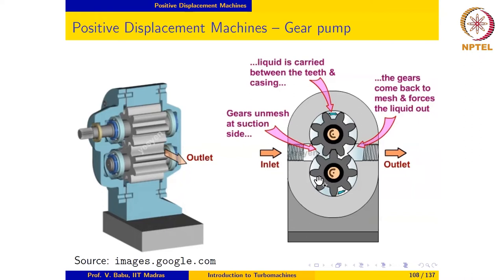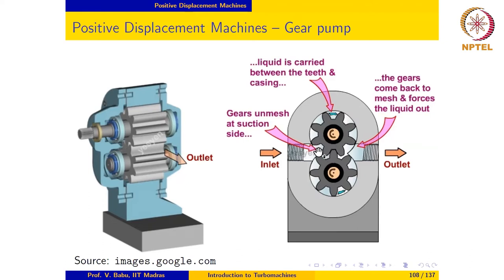When a pair of teeth come up to the inlet point, the gears are completely unmatched and so the volume available between the gears is at a maximum. A certain chunk of fluid is then taken into this volume. As the top gear moves up and the bottom gear moves down, half of the chunk of fluid is carried along in the passage on the top and the remaining half is carried along in the passage below. This is why we call it a displacement pump — the fluid is physically carried by the gears from the inlet to the outlet side.